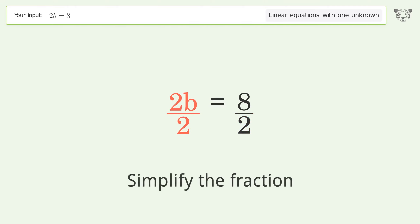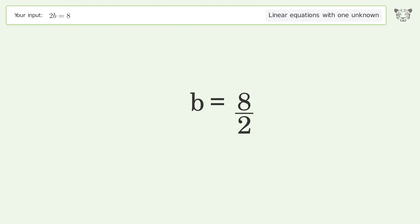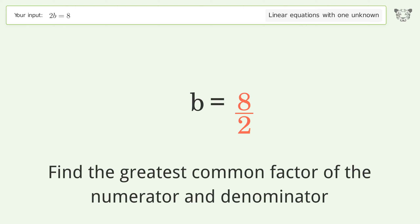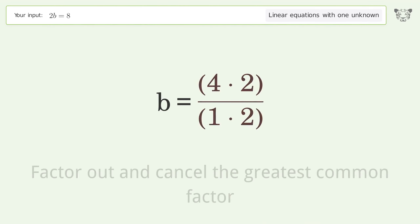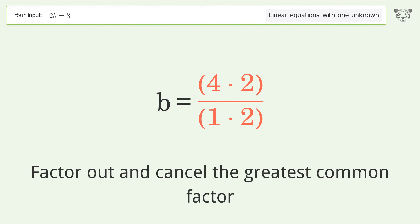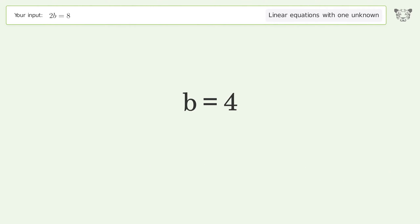Simplify the fraction by finding the greatest common factor of the numerator and denominator. Factor out and cancel the greatest common factor. The final result is b equals 4.